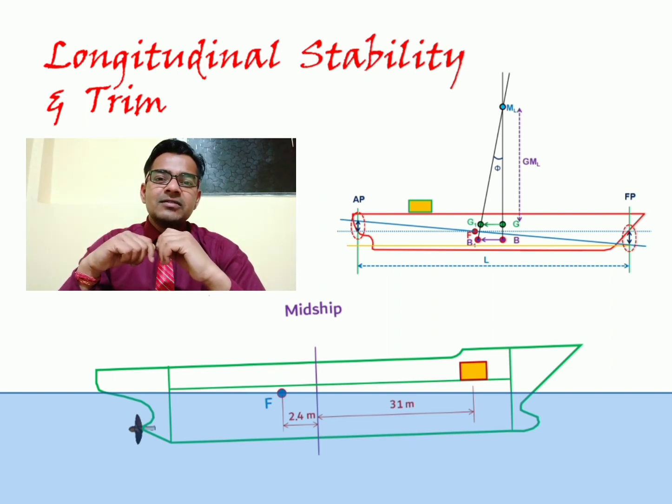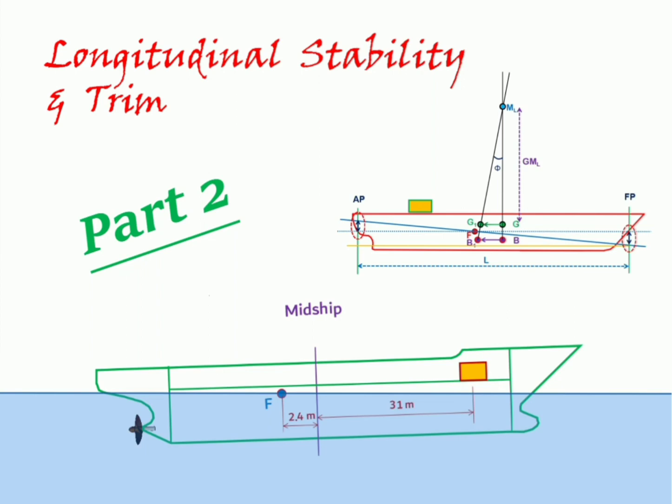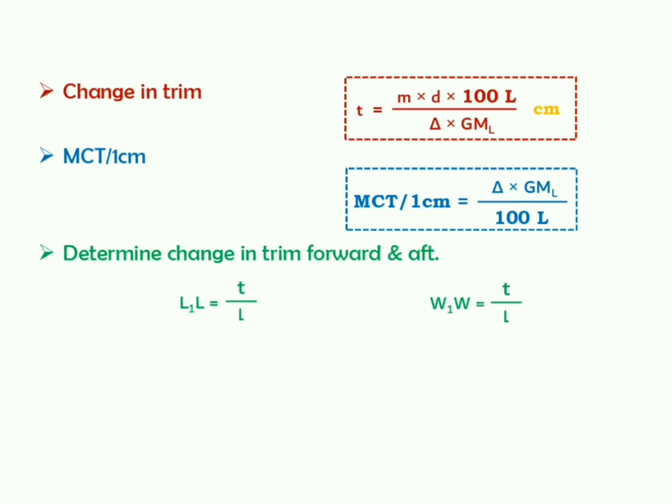In our last lecture, we tried to understand something about the longitudinal metacenter and metacentric height. Here, we will be looking at some more concepts associated with ship's longitudinal stability. In this regard, we are first going to define the change of trim and derive an expression for the same. Followed by, we will try to understand what exactly MCT by 1 cm is and its respective expression. We will then be looking at the determination of change in draft forward and aft, and trying to understand how several problems are to be worked upon. Finally, in order to have more clarity on the same, we will go through an example.